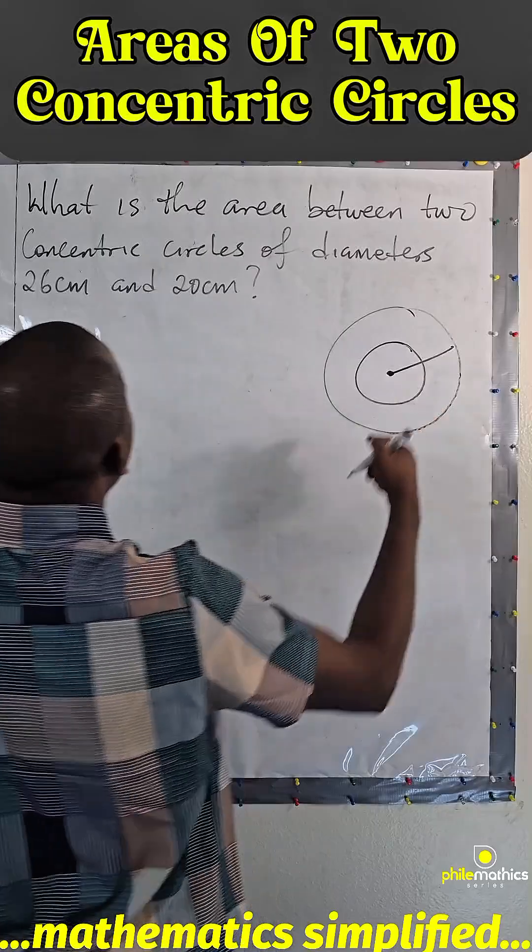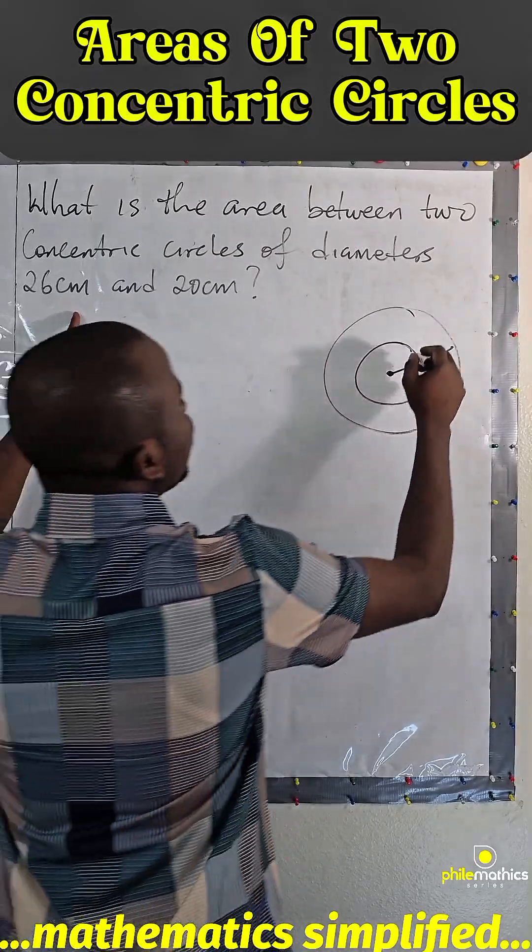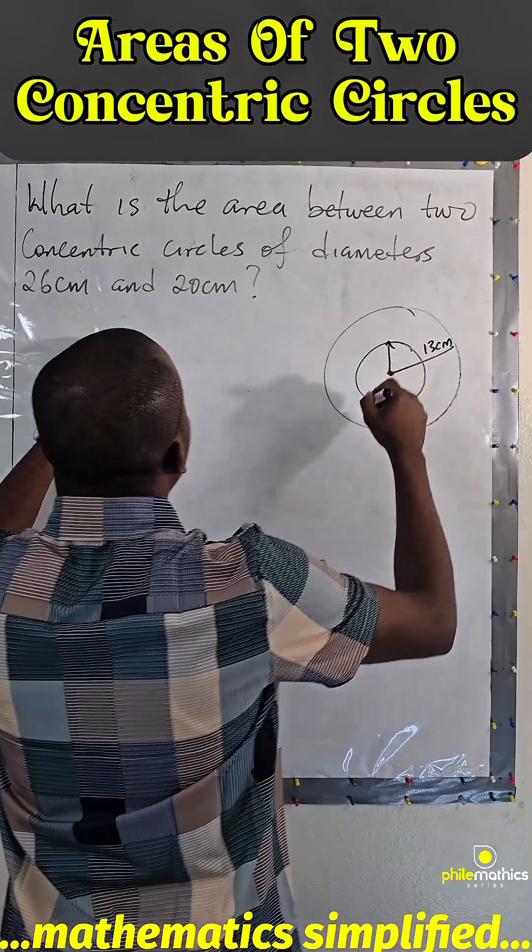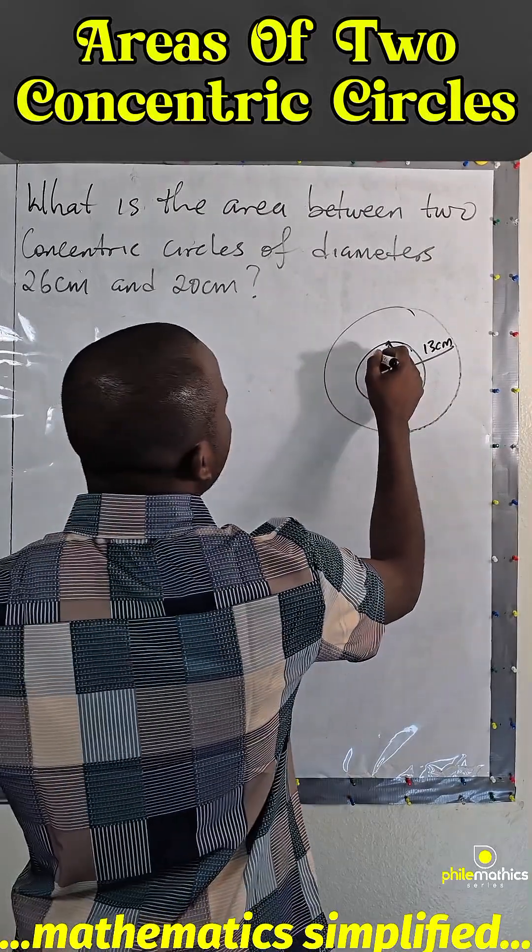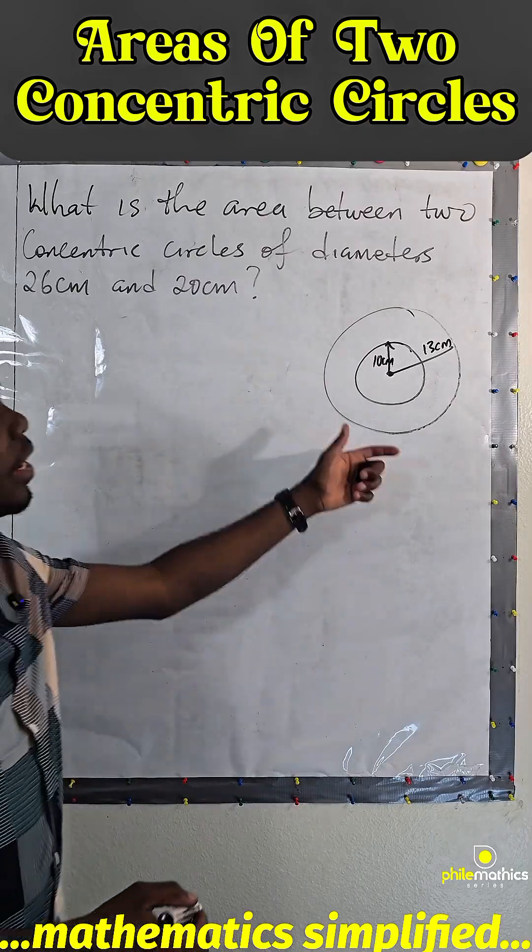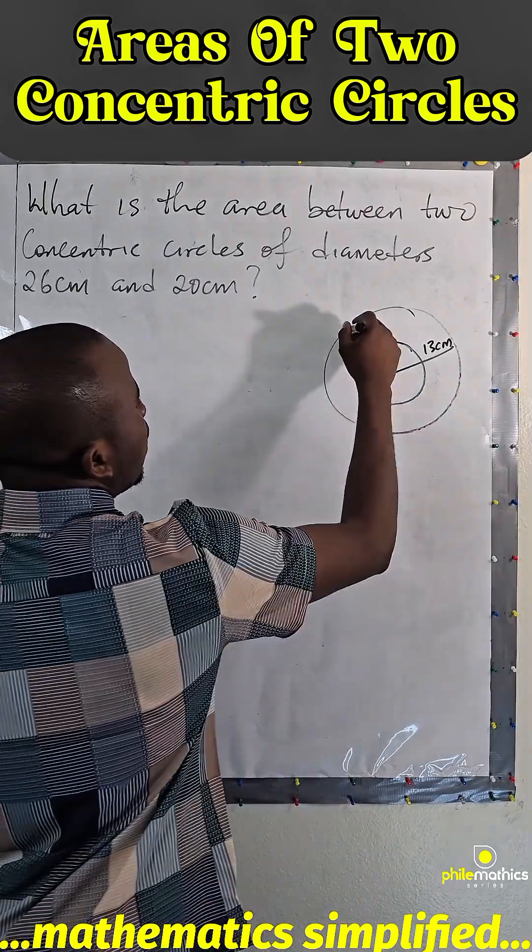The diameter of the outer circle is 26 cm, so the radius is 13 cm. The radius of the smaller one is 20 divided by 2, which is 10 cm. To find the area, this is the area we're looking for.